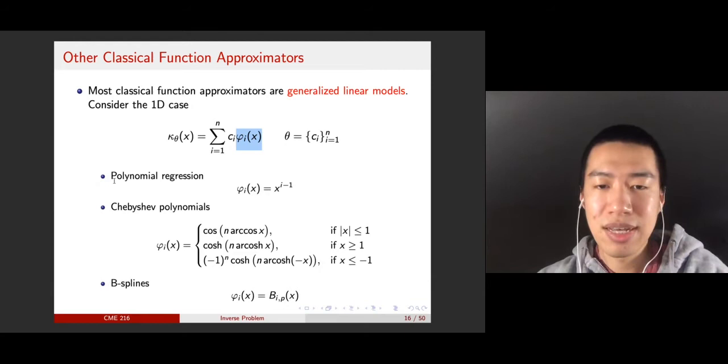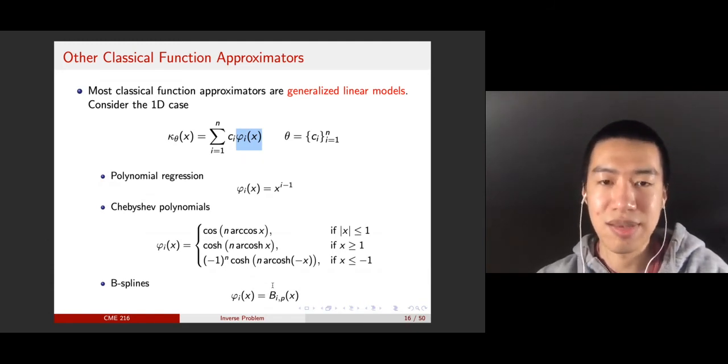For example, the polynomial regression. In this case, phi_i is simply x to the i minus 1 power. In Chebyshev polynomials, phi_i x is just the Chebyshev polynomials. This is usually used in something like spectral method. And also you have B-splines and rational basis functions. And these also form a large class of scientific computing techniques for solving partial differential equations or many other similar problems.